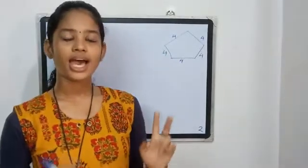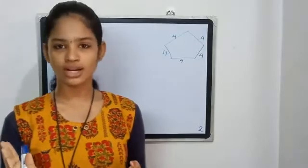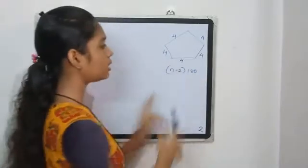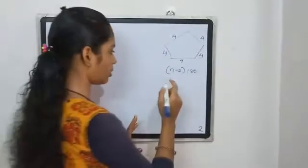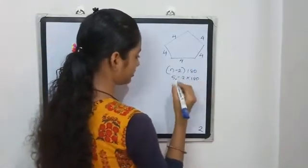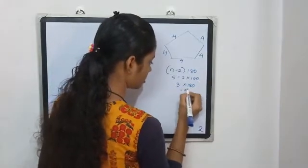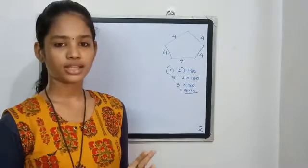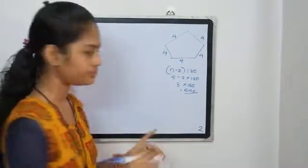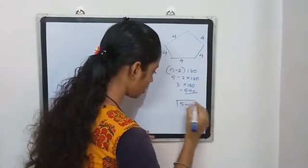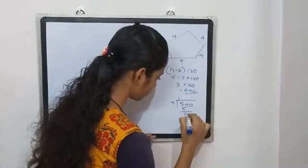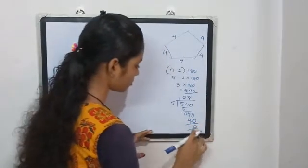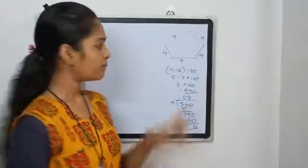To find the angles, we will use the equation (n-2) × 180. n is the number of sides. For a pentagon, n = 5, so 5-2 × 180 = 3 × 180 = 540. We divide 540 by 5, the number of sides. The angle is 108.